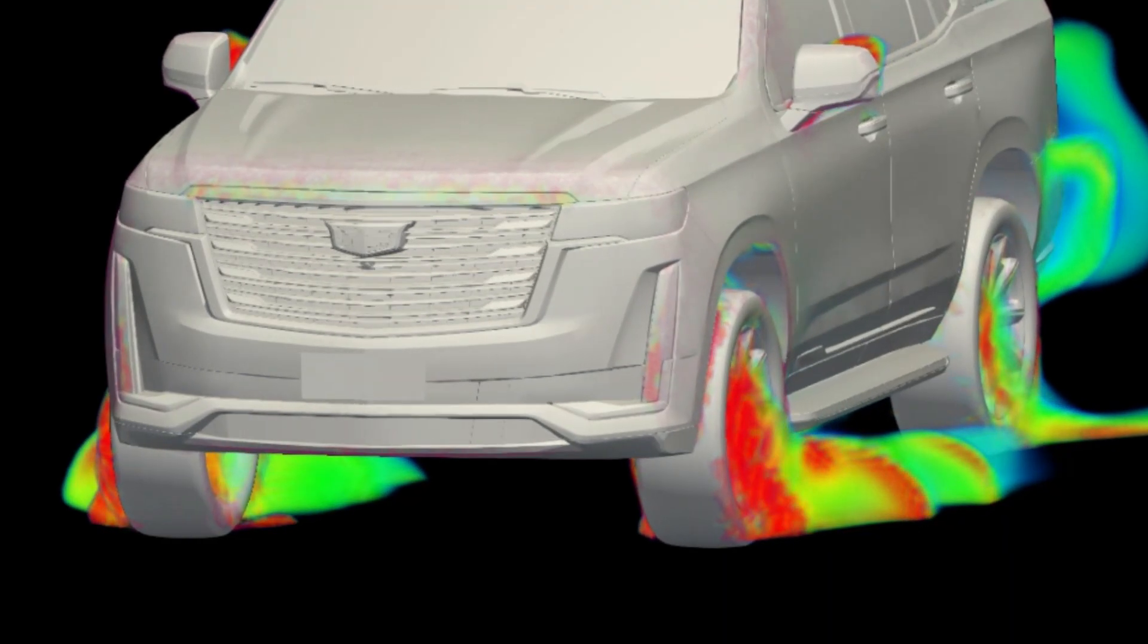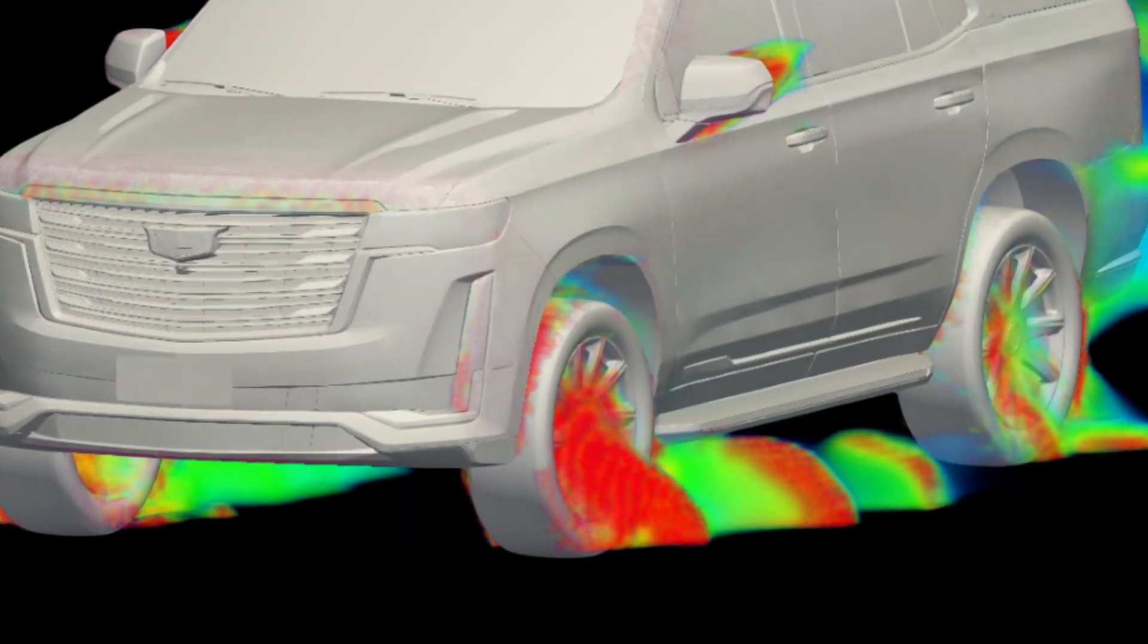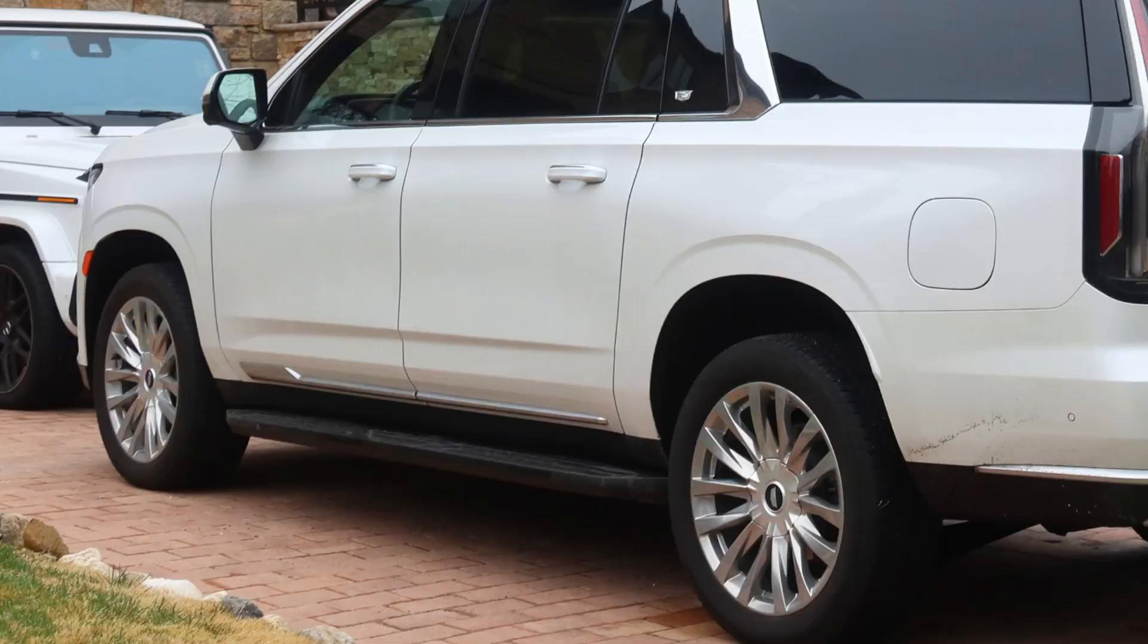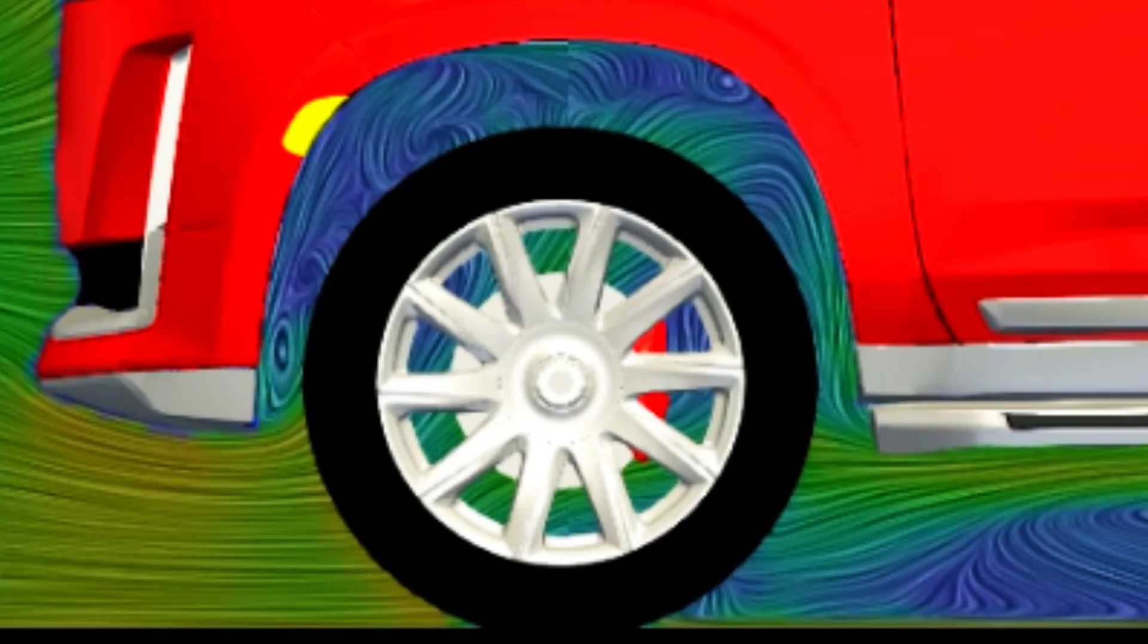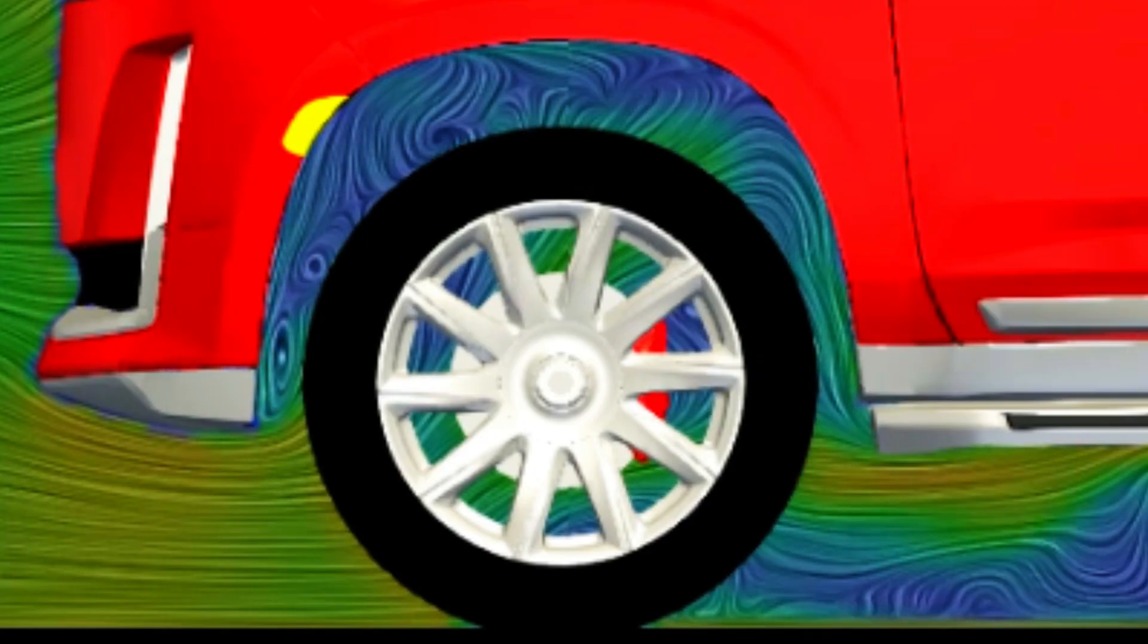But because of what the Escalade is supposed to be, an SUV, very open wheelhouses are needed to accommodate the travel of the wheels from the suspension. Lowering the car reduces the Escalade's functionality. So while this model is bad for drag, it's kind of necessary here.